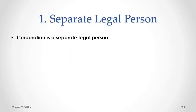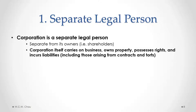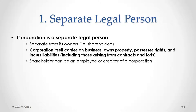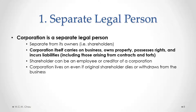In contrast to a sole proprietorship or a partnership, a corporation is a separate legal person — it is separate from its owners, the shareholders. Because it is a separate legal person, a corporation can do almost anything legally that a human person can do: it can carry on business, own property, possess rights, and incur liabilities. A shareholder can even be an employee or creditor of a corporation because the corporation is a separate legal person. And because it is a separate legal person, a corporation can live on even if the original shareholder dies or withdraws from the business.